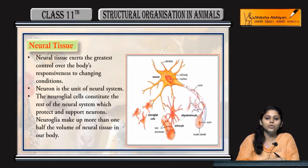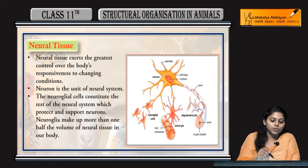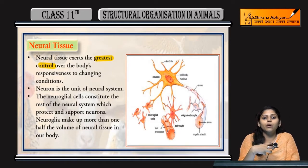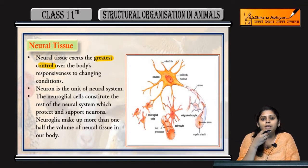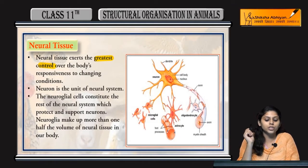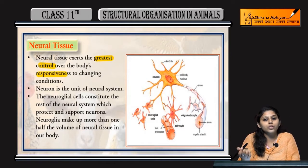Next tissue is neural tissue. Jaise humari body mein brain hota hai, vaise hi tissues mein neural tissue is like a brain — jo exert karta hai greatest control over our body's responses. Hum jo bhi response kar rahe hai, like agar hume feel ho raha hai ki koi hume touch kar raha hai, hum taste kar pa rahe hai — woh kis ki wajhe se ho raha hai? Because of neural tissues.